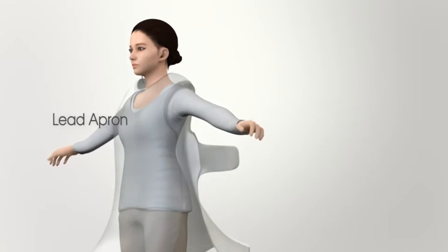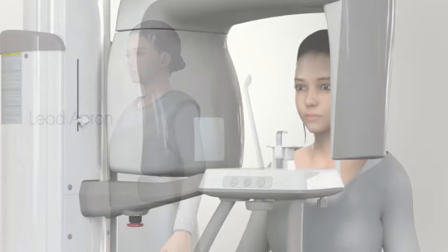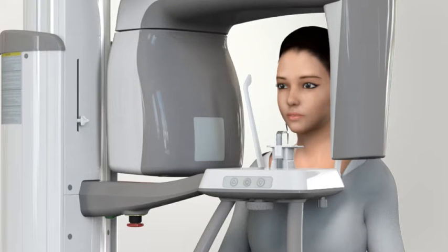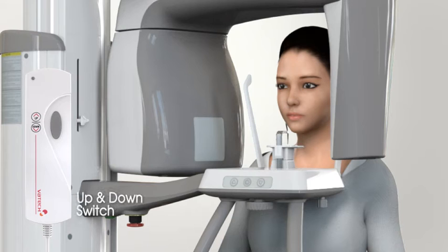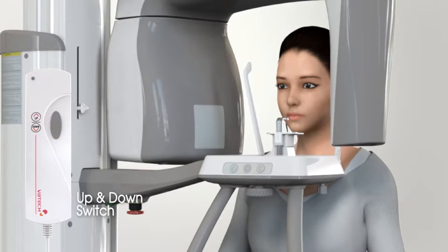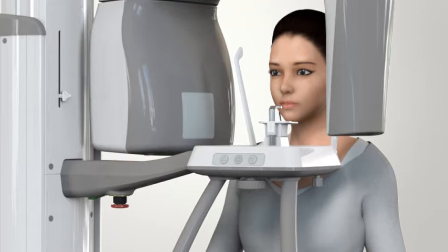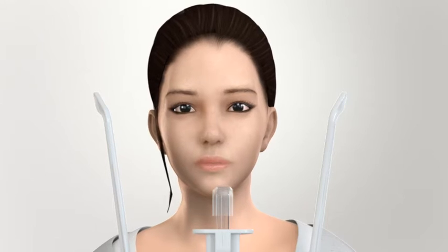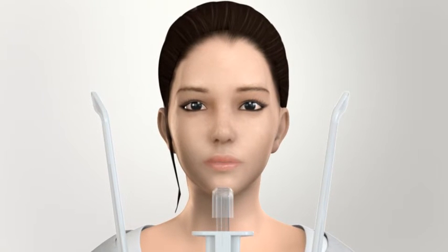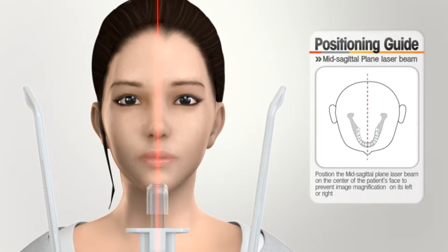Assist the patient to appropriately wear the lead apron. Be careful the lead apron is not above the patient's neck. Ask the patient to stand in front of the handle frame. Adjust the chin rest position approximately to the height of the patient's chin using the up-down switch. For Pax Eye, the chin rest position can be adjusted using the up-down switch on the handle frame. Place a hygienic cover over the bite block and ask the patient to grasp the handle. Confirm the patient's right and left shoulders are parallel and lead the patient to relax.